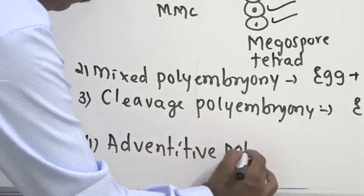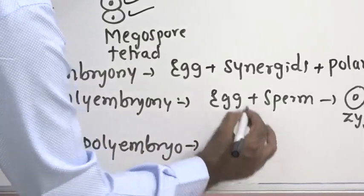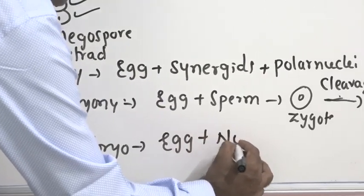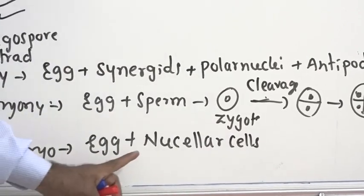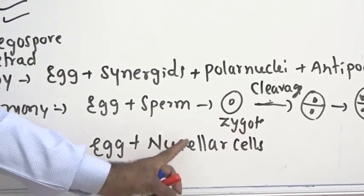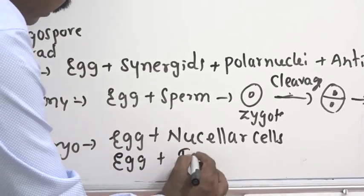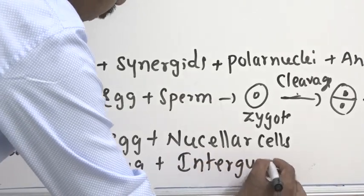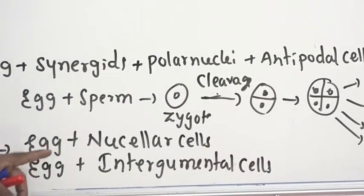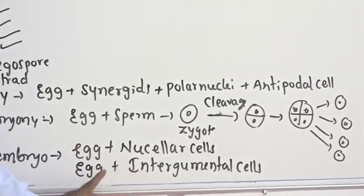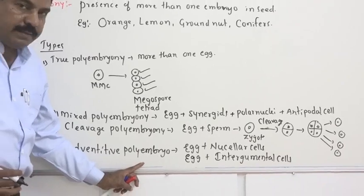In adventive polyembryony, along with an egg, there may be fertilization of nucellar cells. You know, around embryo sac, nourishing tissue is there, its name is nucellus. If these cells fertilize, polyembryony may take place. Either, along with egg, the integumental cells. You know, integuments are the coverings of the, especially ovule. If integumental cells and egg fertilize, many embryo form, that what we call the name, adventive polyembryony.